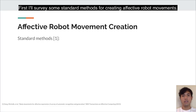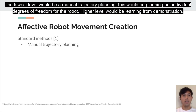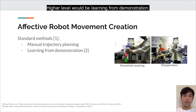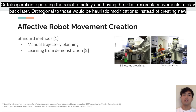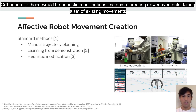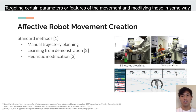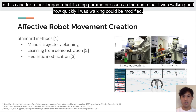To survey some standard methods for creating affective robot movements: the lowest level would be manual trajectory planning, so planning out individual degrees of freedom for the robot. A higher level would be learning from demonstrations — either kinesthetic teaching, so physically moving a robot and having its encoders record its position, or teleoperation, so operating the robot remotely and having it record its movements to play back later. Orthogonal to this would be heuristic modification: taking a set of existing movements and targeting certain parameters or features and modifying those. For example, a four-legged robot's step parameters such as walking angle and speed could be modified.